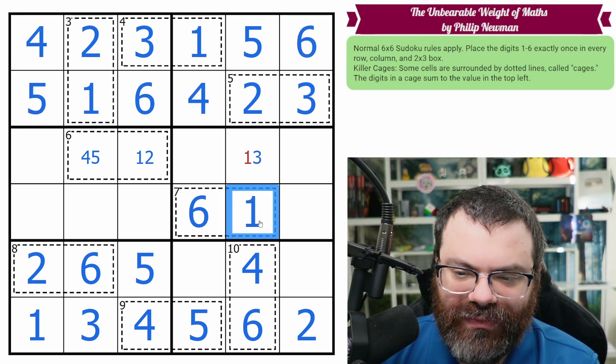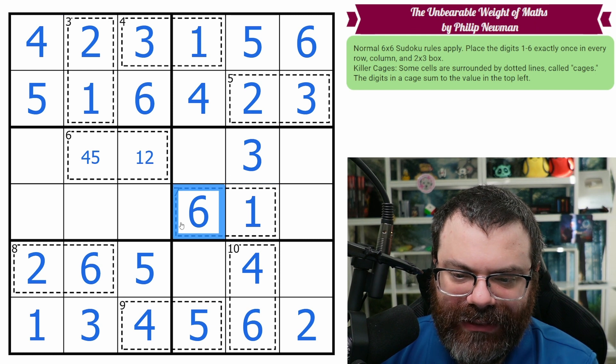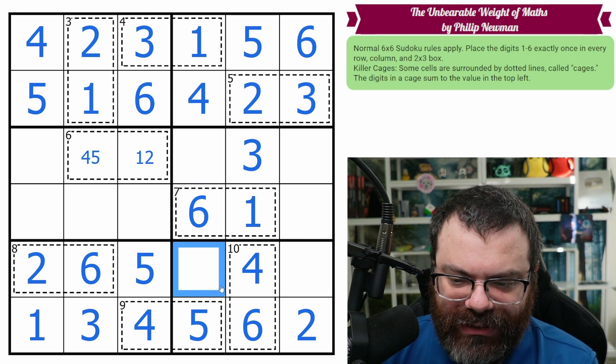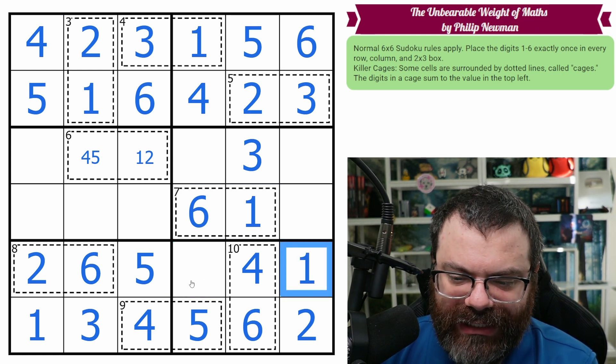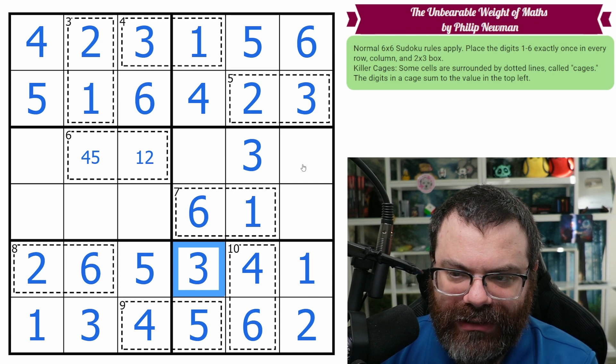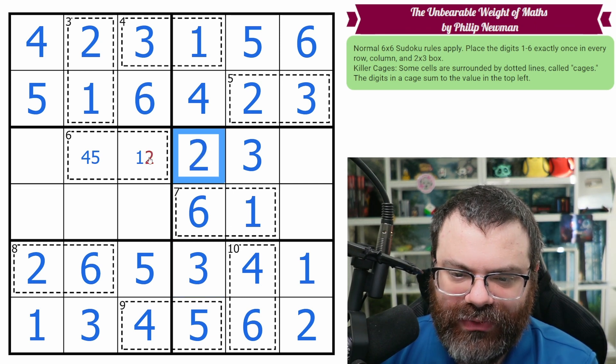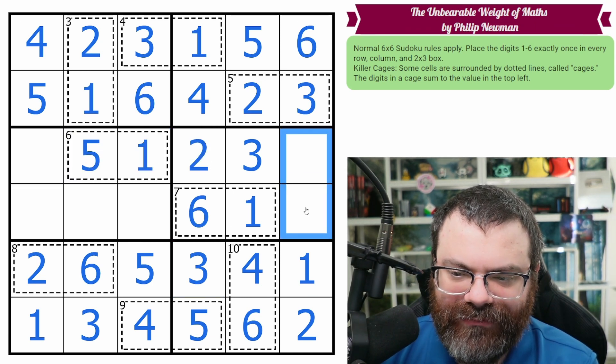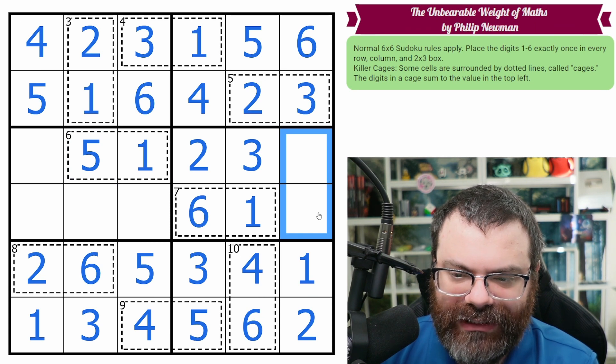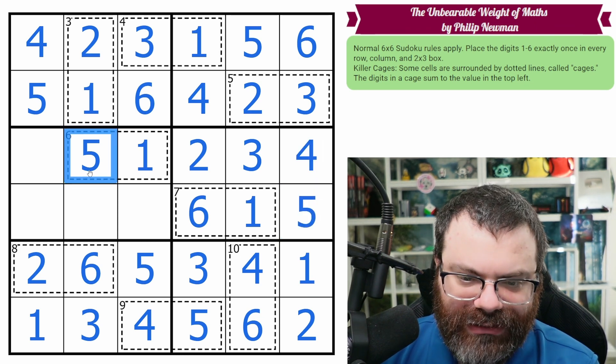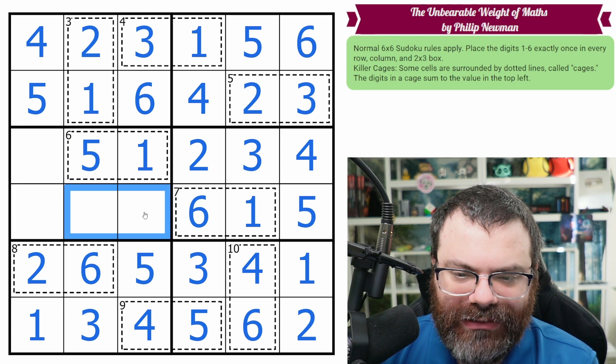This is now 6 plus 1. That makes that a 3. Over here, we've got a 1 and a 3. This is a 2, so we get 1 plus 5. Over here, we have 4 and 5, which go like that because of that 5.